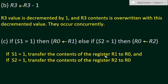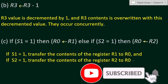For the third statement: if S1 equals one, the contents of register R1 are transferred into R0. If S1 is not equal to one and S2 equals one, then the content of R2 will be transferred into R0 — that is, if S2 equals one, transfer the contents of register R2 to register R0.